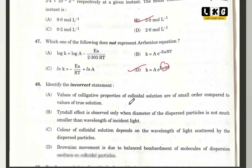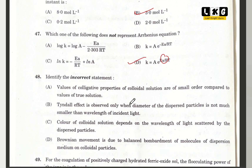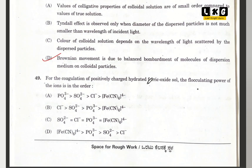Question number 48: identify the incorrect statement about Brownian motion — from the reduced syllabus. Option D is correct. Question number 49: for the given reaction involving positively charged hydrated ferric oxide sol, option D is correct.